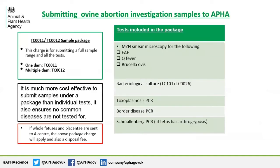When submitting samples to APHA, it is much more cost effective to select the sample packages — TC0011 for one dam or TC0012 for multiple dams — rather than the individual test codes. Packages also avoid the risk of missing a common cause of abortion. You can see from the table that all the common causes of sheep abortion are screened for in our packages. The same fees are applied to fetal carcasses sent to our centres, but there is an additional disposal fee.